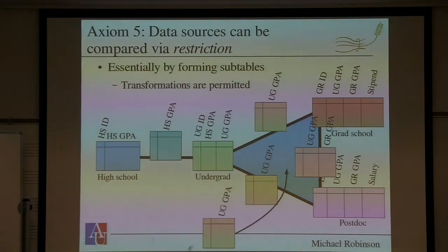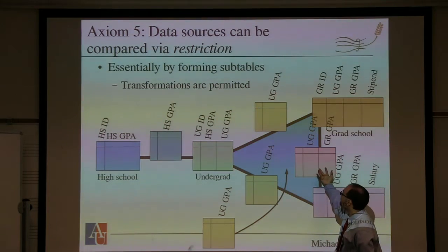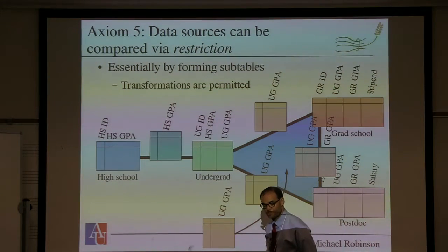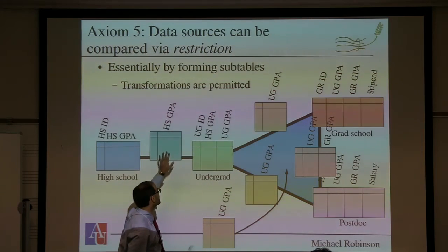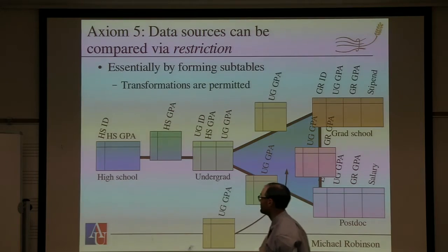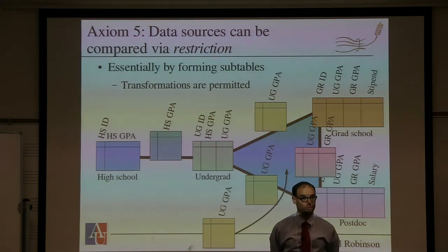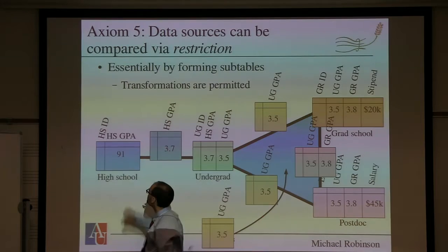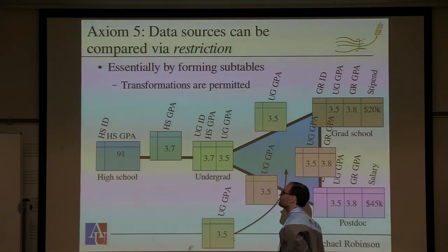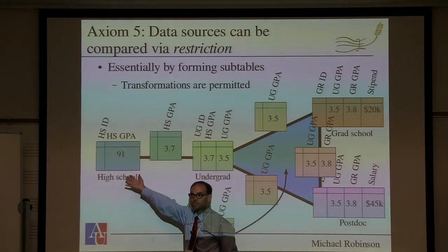The undergraduate GPA is present in multiple tables. I'm also allowed to have some kind of transformations between the data. Perhaps the high school reads out on a hundred-point scale and the undergraduate only deals with four-point scales, so you have to do some kind of transformation. For instance, a student got a 91 as their high school GPA — that corresponds to a 3.7 on the four-point scale, and that's what the undergraduate institution stores. These two scores, even though they're numerically different, are consistent from the point of view of what they mean.